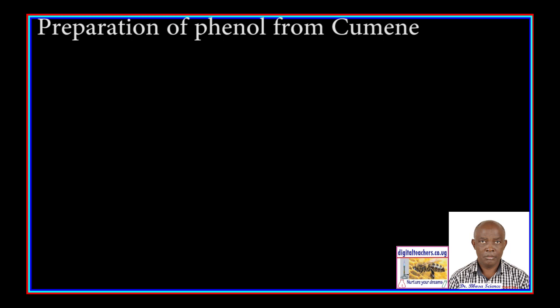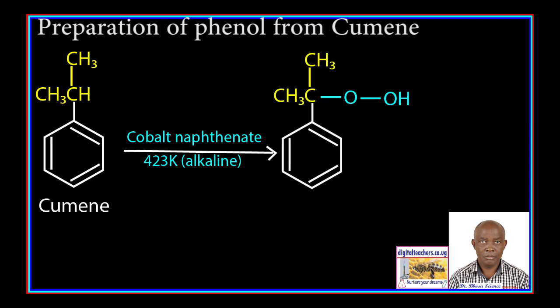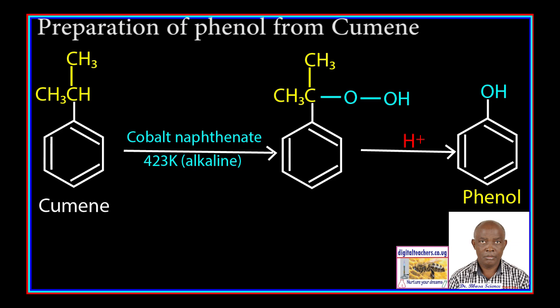Preparation of phenol from cumene: Cumene, or 2-phenyl propane, is oxidized by oxygen in the presence of cobalt halide at 425 degrees in an alkaline media to form a peroxide, which is hydrolyzed by dilute sulfuric acid to form phenol.